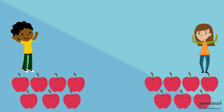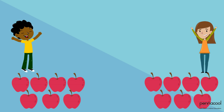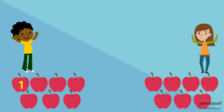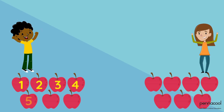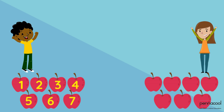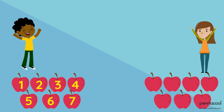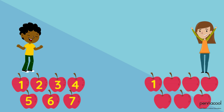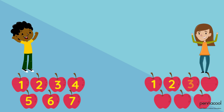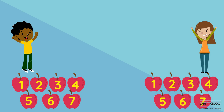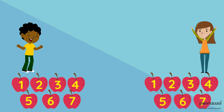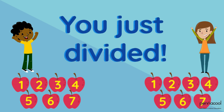Wow, well done! Now let's count to see how many each person has: 1, 2, 3, 4, 5, 6, 7 for our first person, and 1, 2, 3, 4, 5, 6, 7 for our second person. They both have the same amount, which means you have just divided.